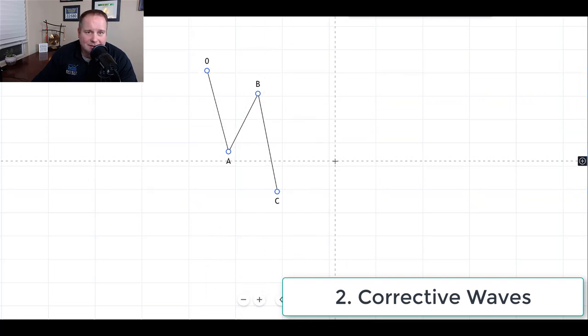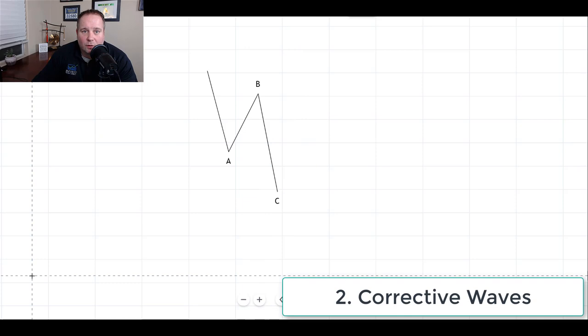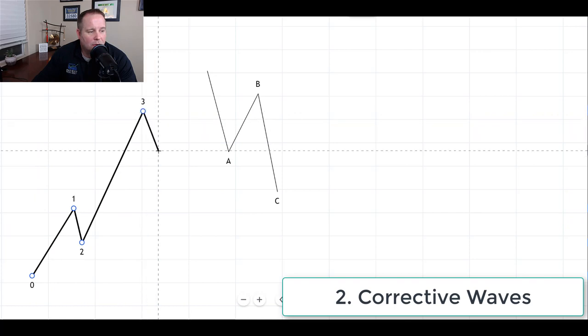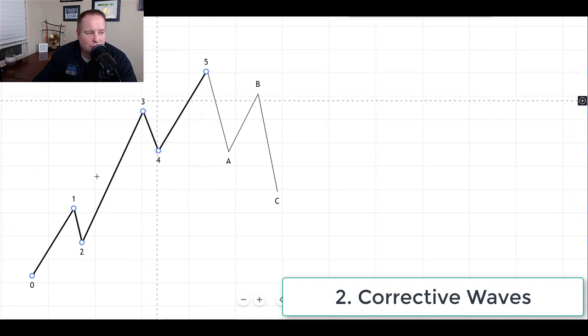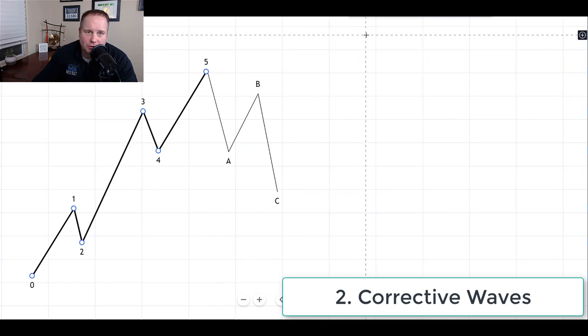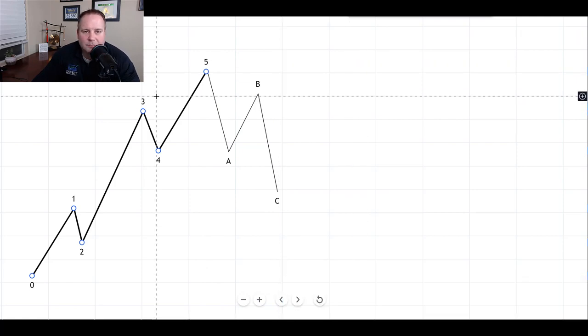There are a couple exceptions to that that we will get into in later videos. But for basic Elliott wave rules, it is a three wave pattern. So if we grab an impulsive wave and draw it here, you would have your five wave structure, followed by a three wave corrective pullback. And then you would look for another five wave structure up. And this would be considered a complete Elliott wave cycle.